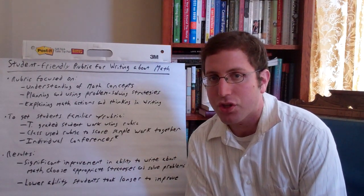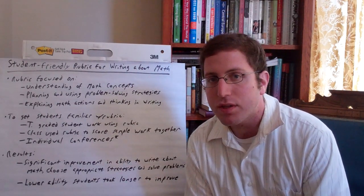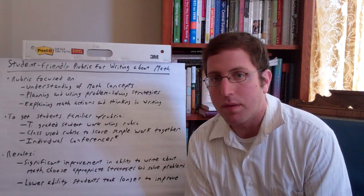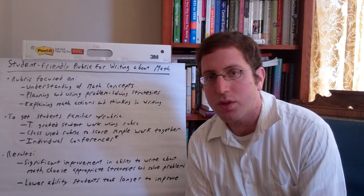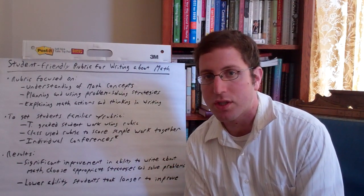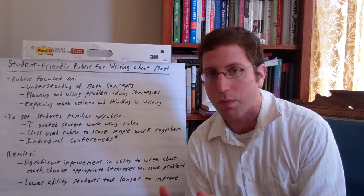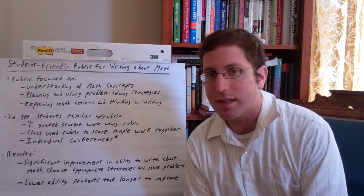To do kind of an action research aspect of this, what the teacher did was she gave the students one word problem per week for five weeks, and then she specifically tracked one student that was representing the above-average group in her class, one student that was representative of the average group, and one student that was representative of the below-average group. And what she found was some interesting things.